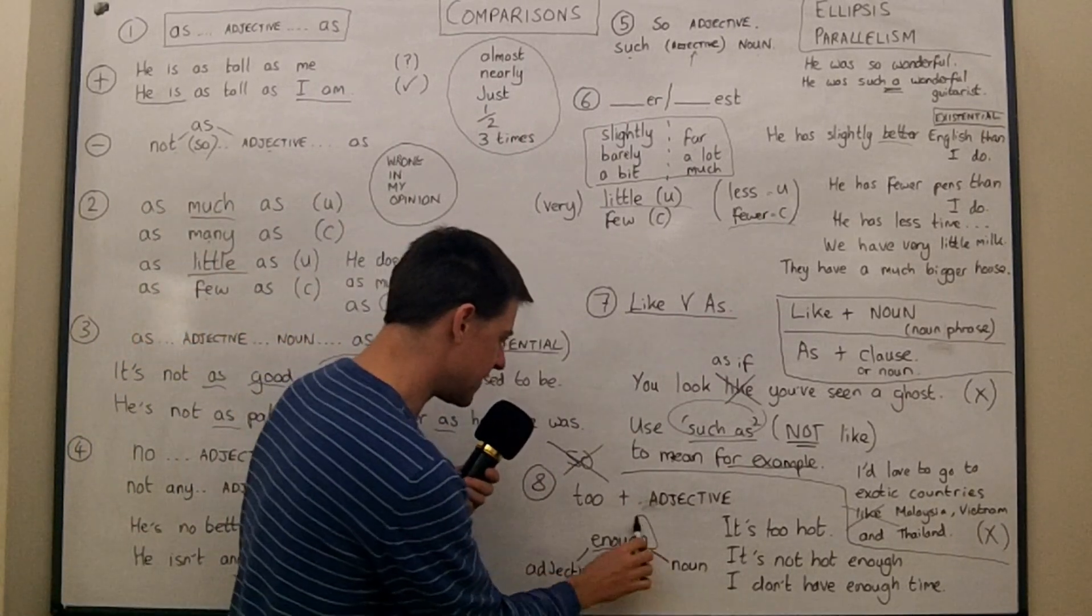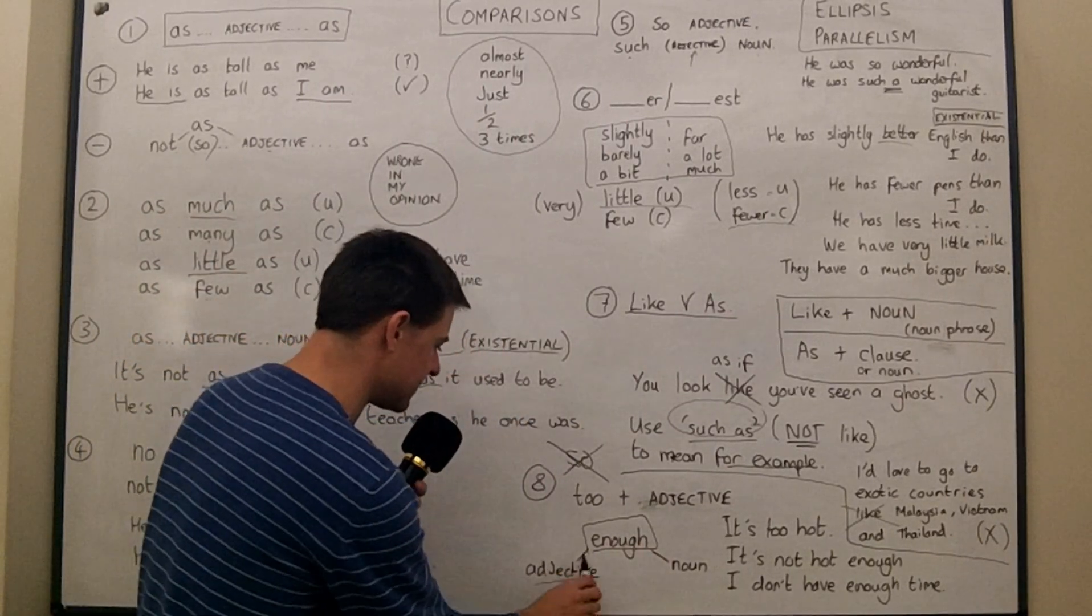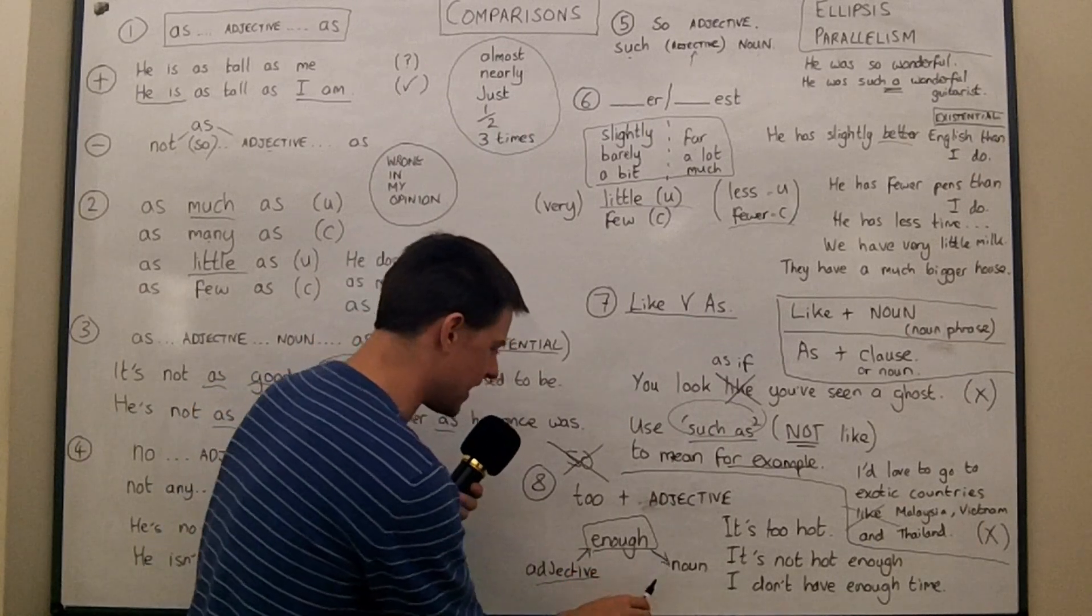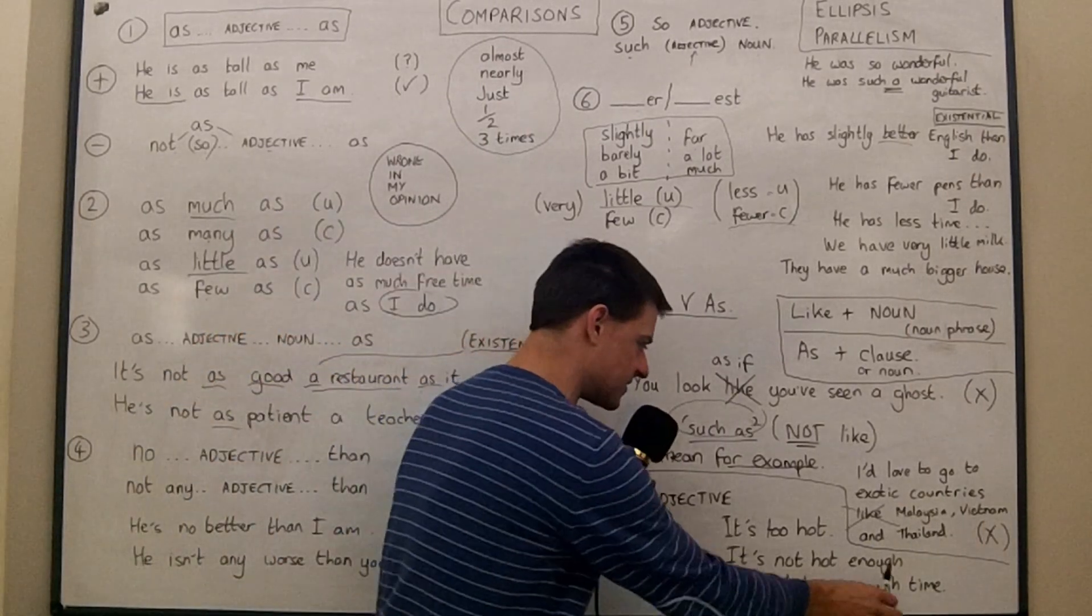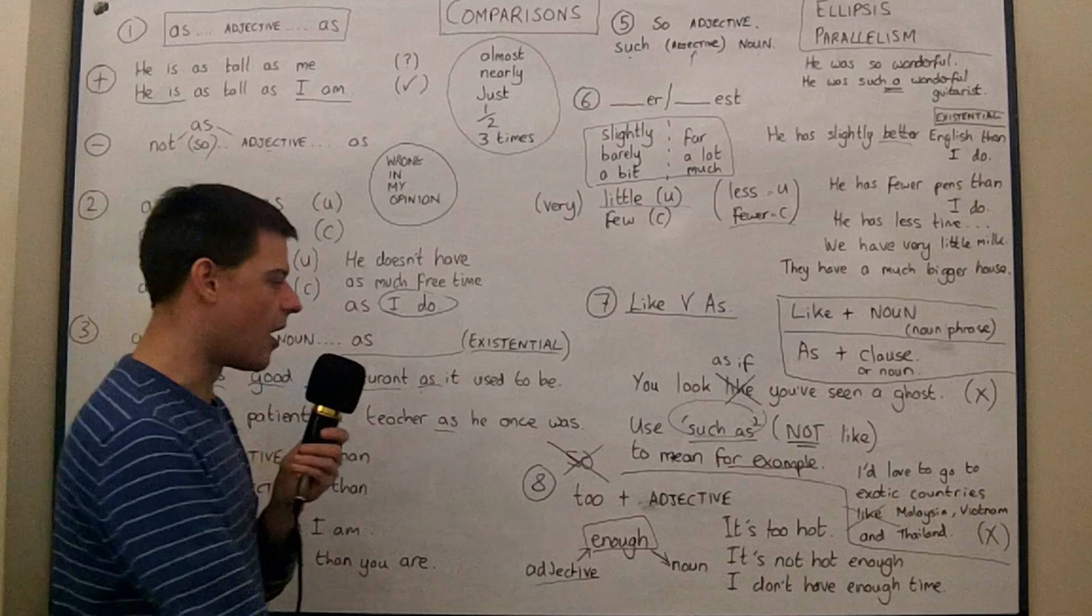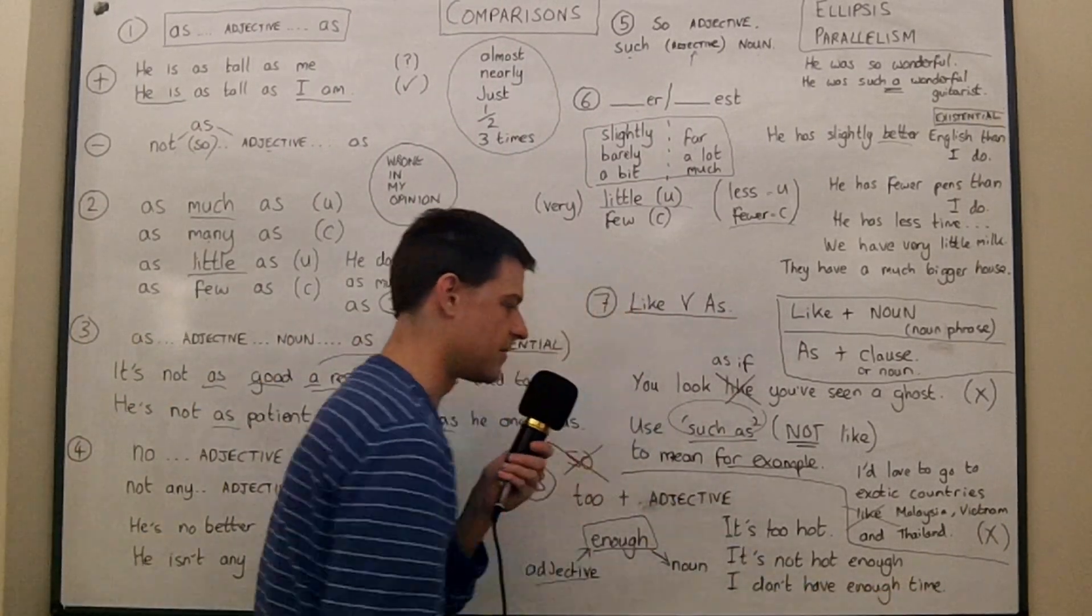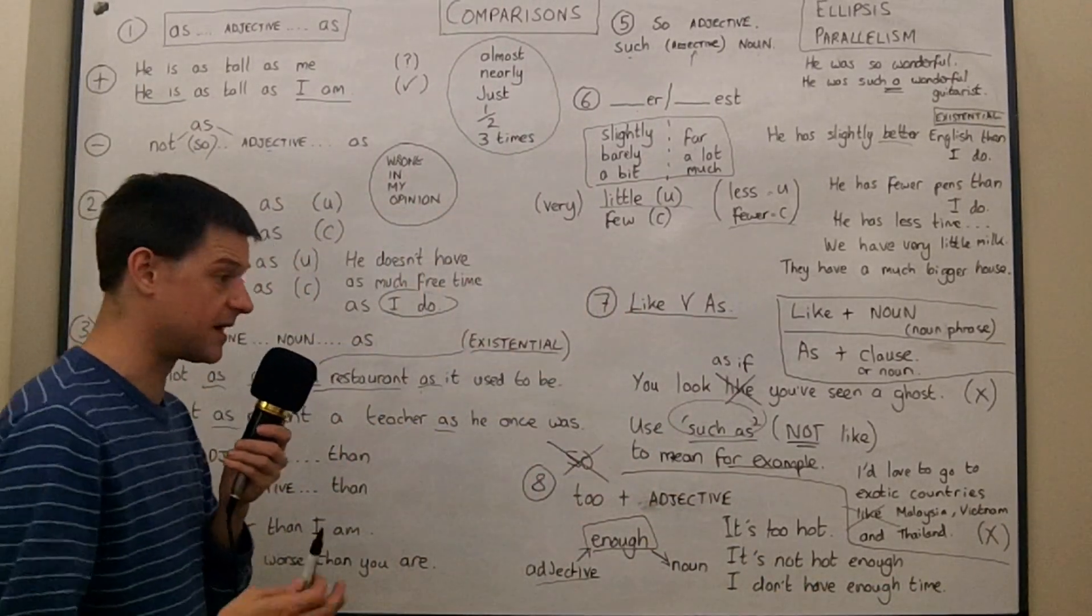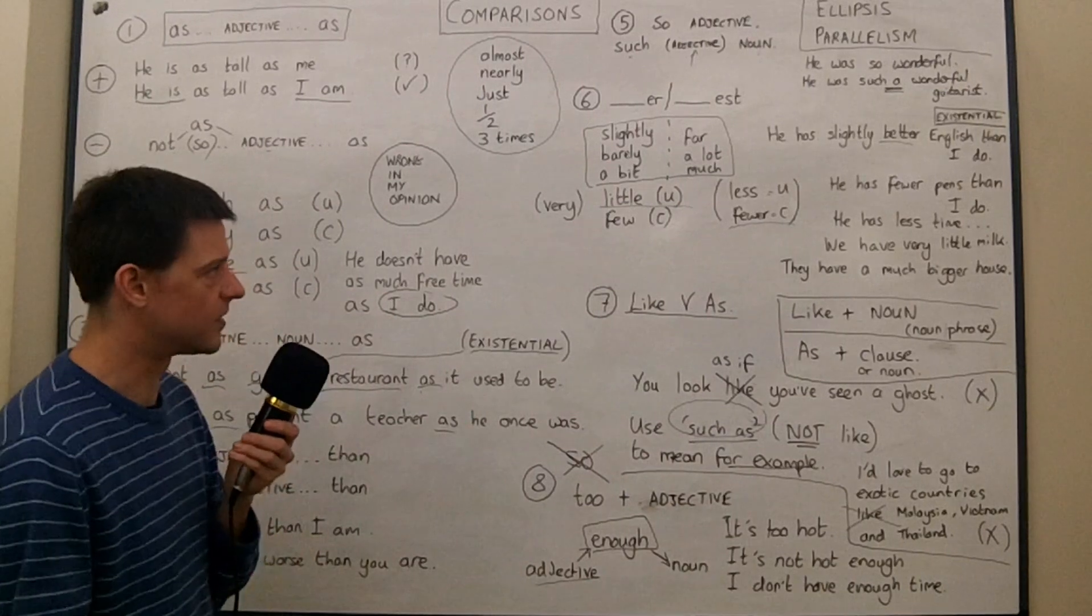Make sure it goes after adjectives, but before nouns. So it's not hot enough, my coffee, or I don't have enough time. I don't have enough money. I don't have enough patience. Whatever it is.